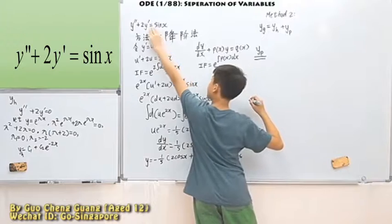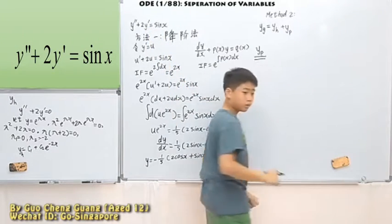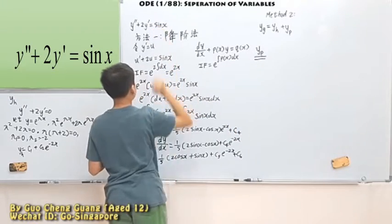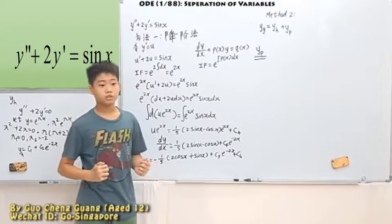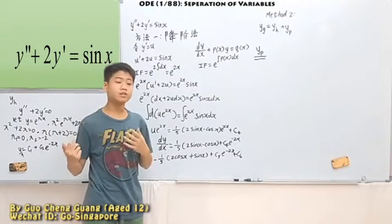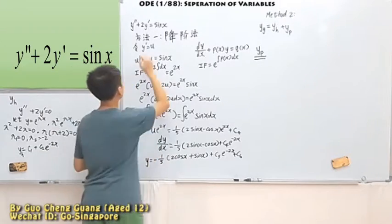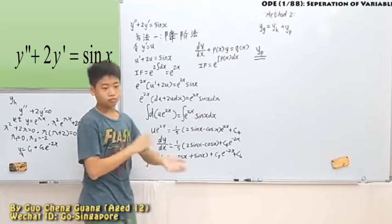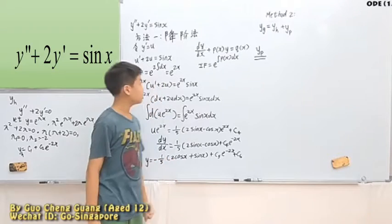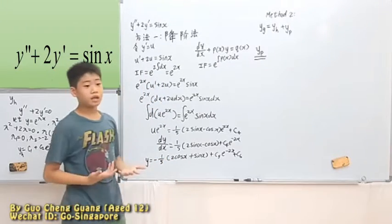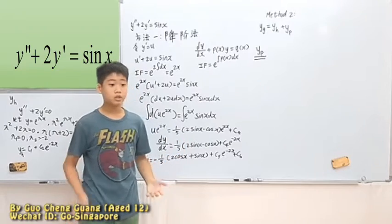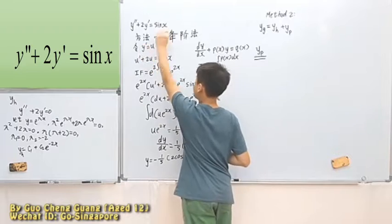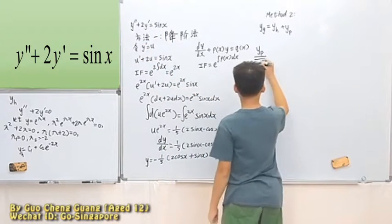So for this part, what kind of method can we use? Let's first think. How can we get sine x? Sine x, sine and cosine. When they differentiate, they just convert to each other. First derivative, cosine becomes sine, sine becomes cosine. Second derivative, it just changes. So that means sine and cosine, we need both of them to check that we can get this sine x.